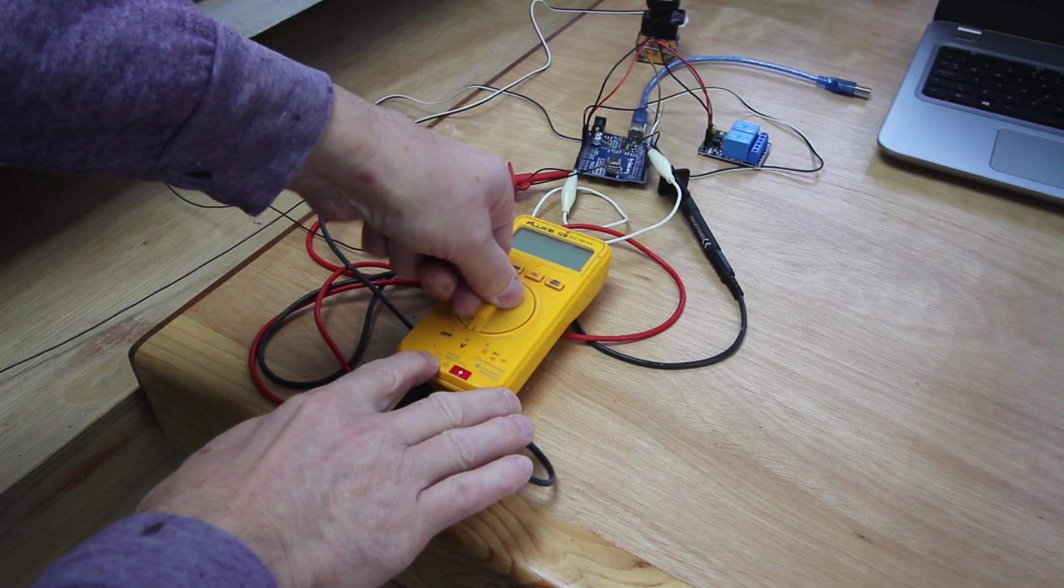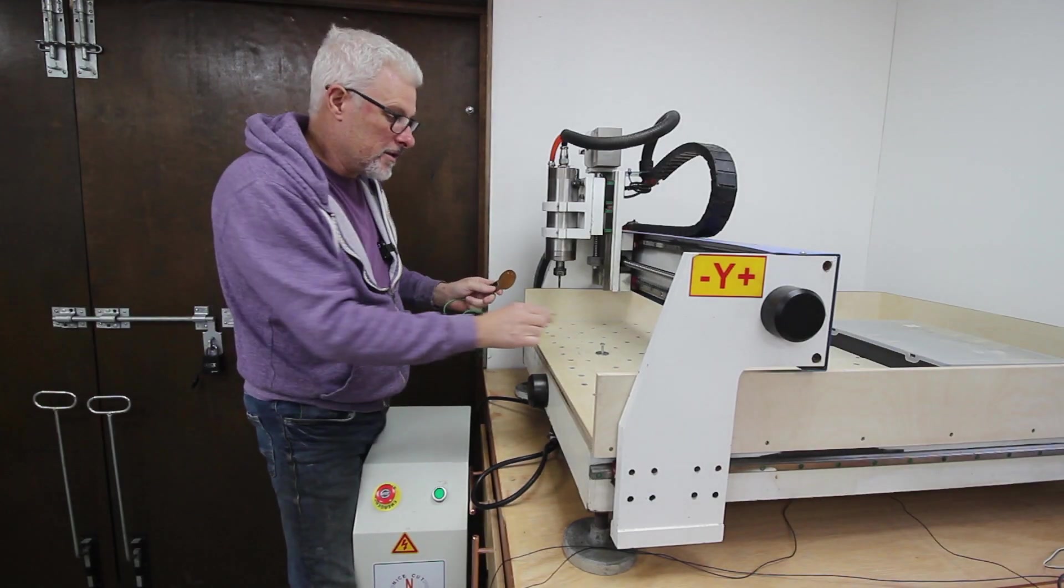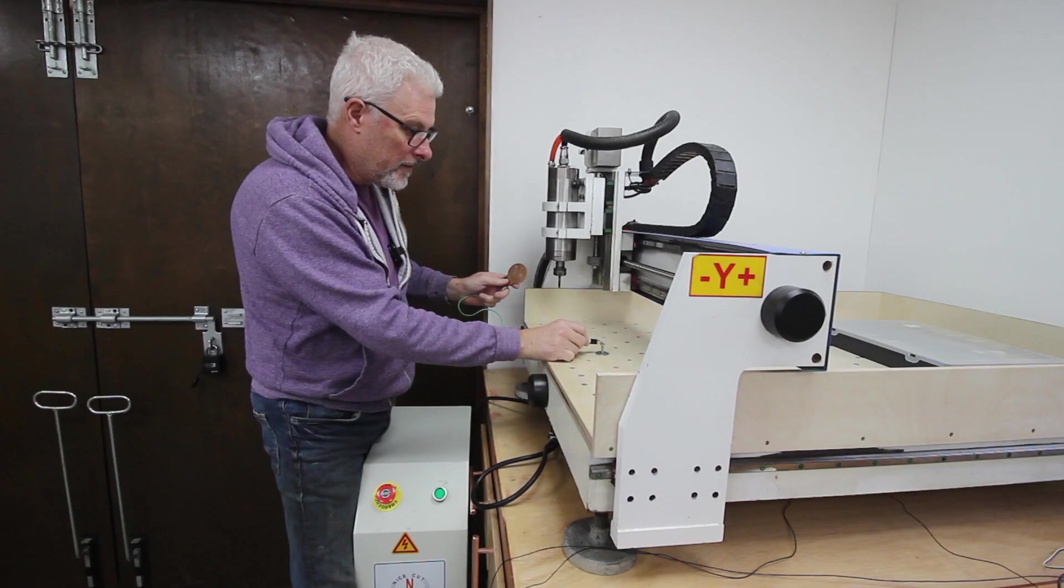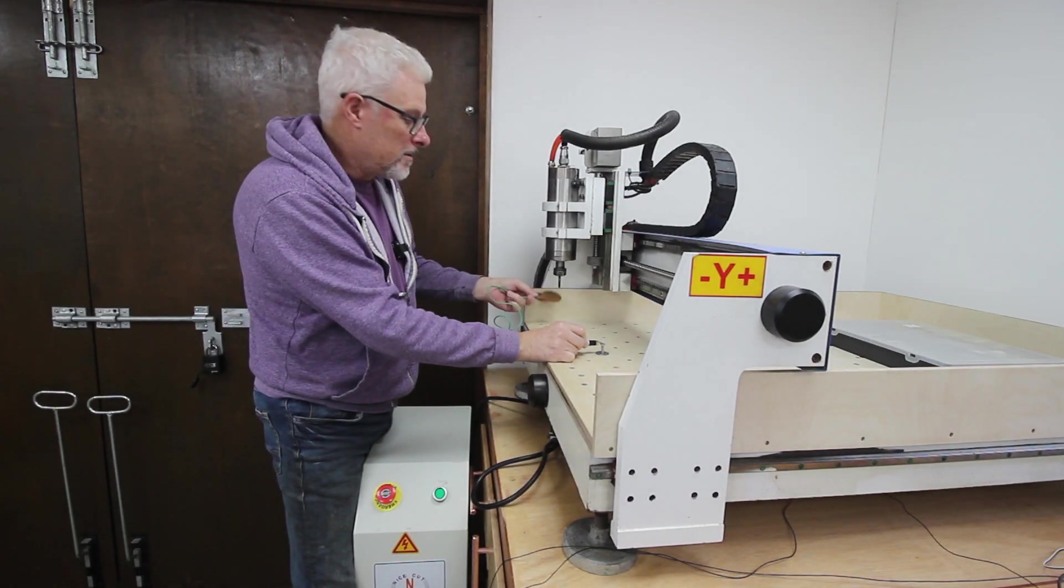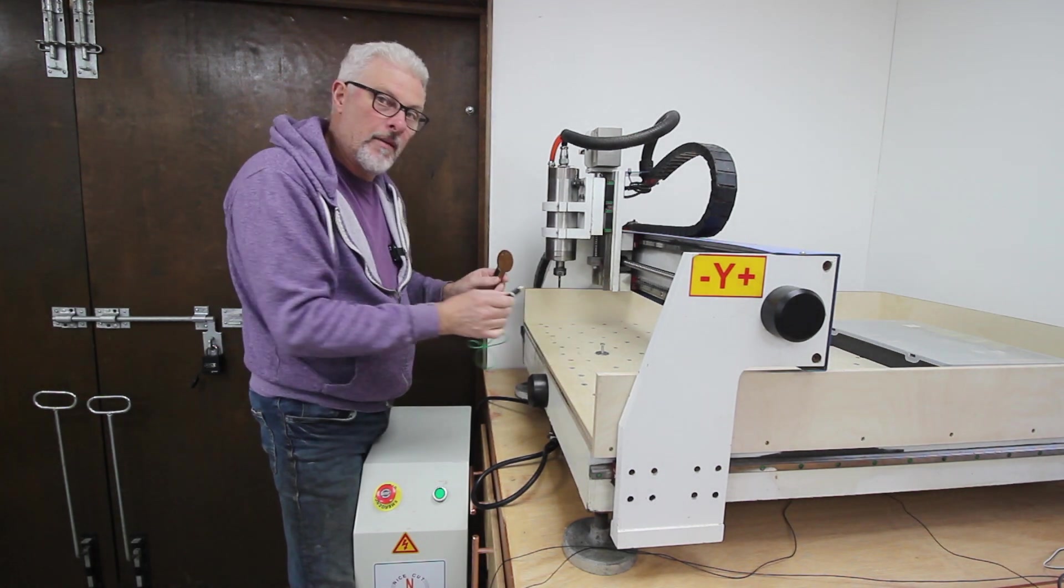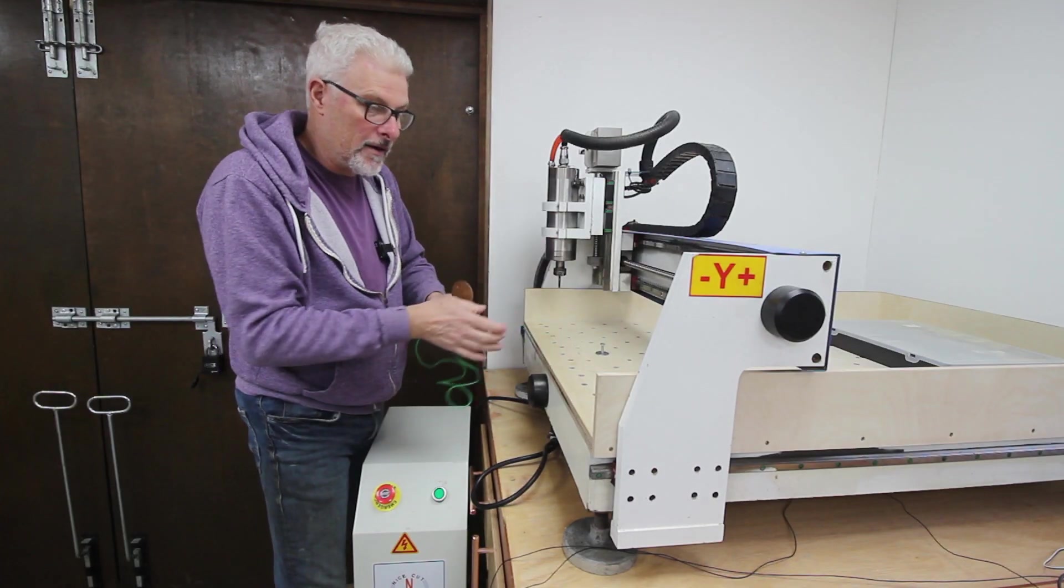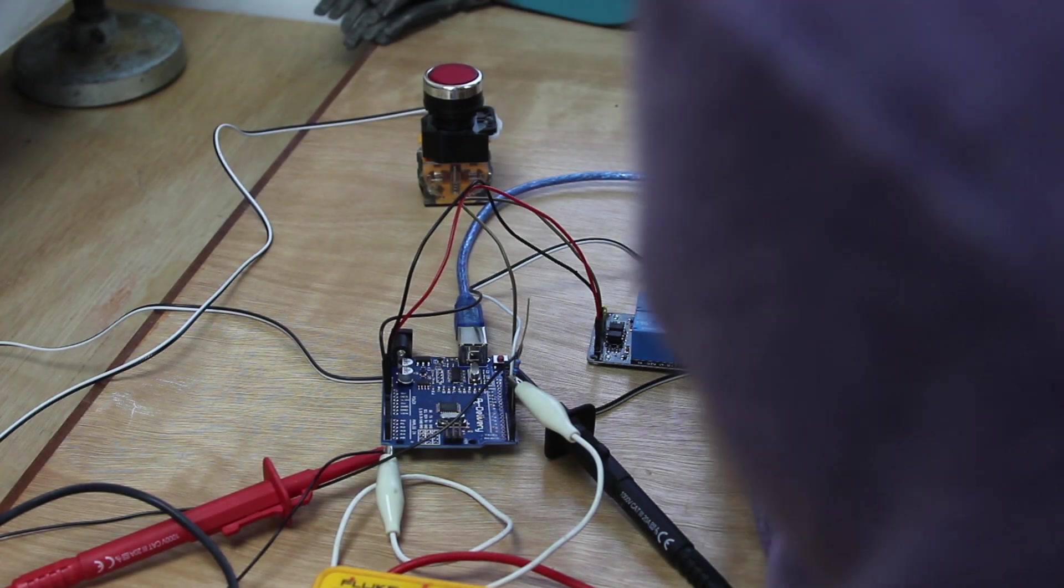If I turn on my multimeter, which is on the other end of those cables, and put it into resistance mode, when I ground out any one of these metal contacts it should beep. There we go, so we have reliable connection between here and the Arduino.